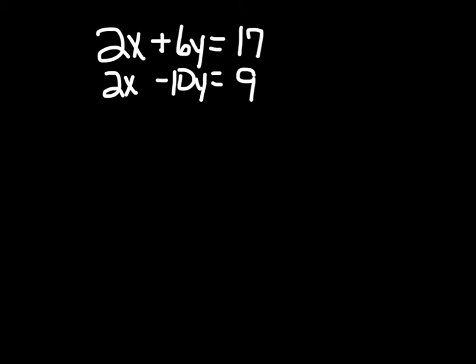Let's take a look at a second example. Our first equation is 2x plus 6y equals 17, and our second equation is 2x minus 10y equals 9. In this case, I would choose to eliminate my x's.